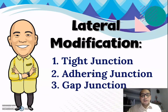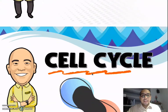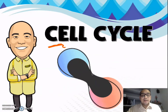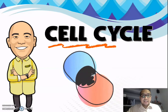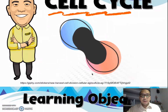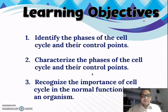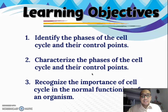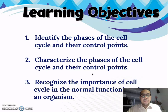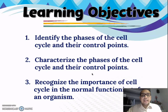Now, for this week we will be discussing the cell cycle. Let me present our learning objectives. First, identify the phases of the cell cycle and their control points. Second, characterize or describe the phases of the cell cycle and their control points. Third, recognize the importance of the cell cycle in the normal functioning of an organism.